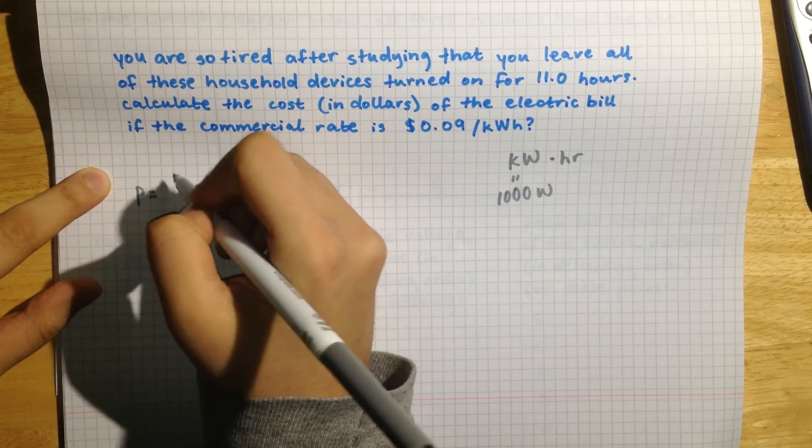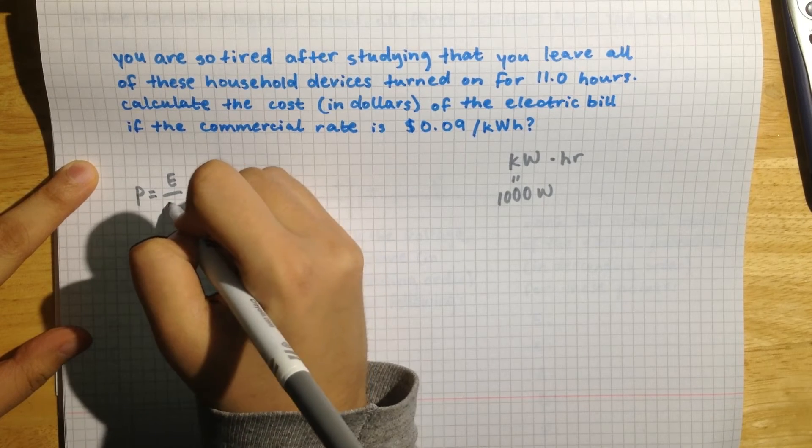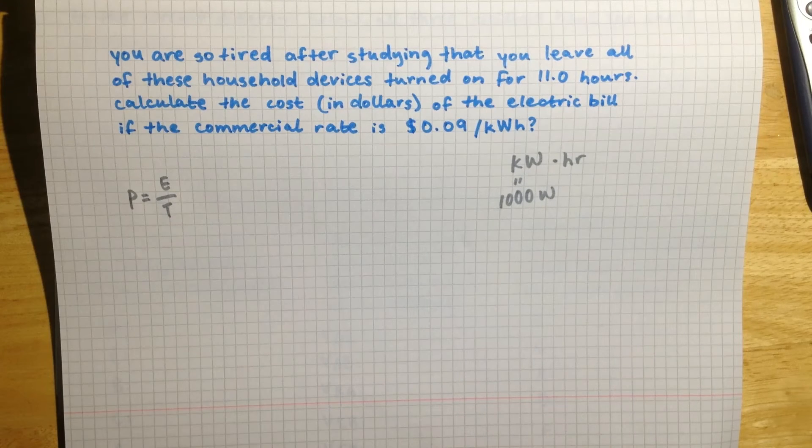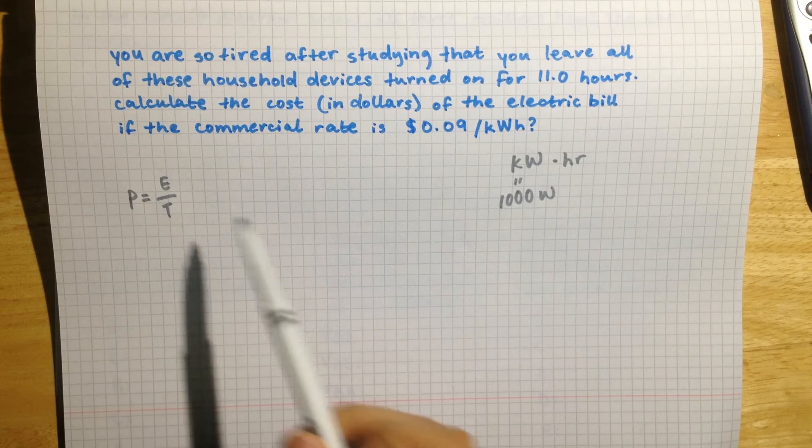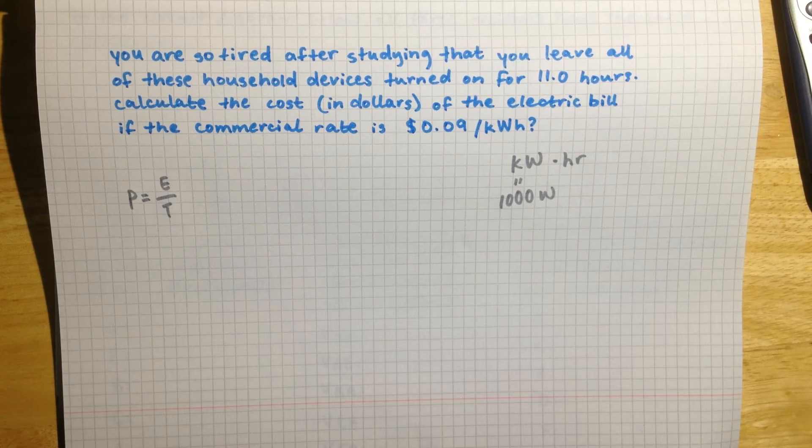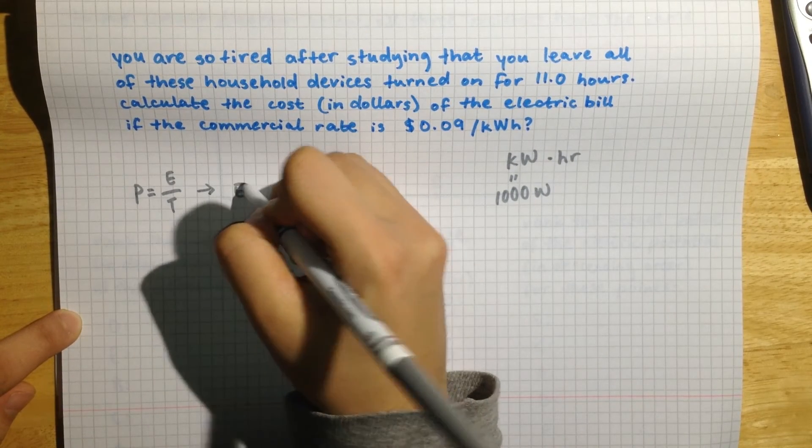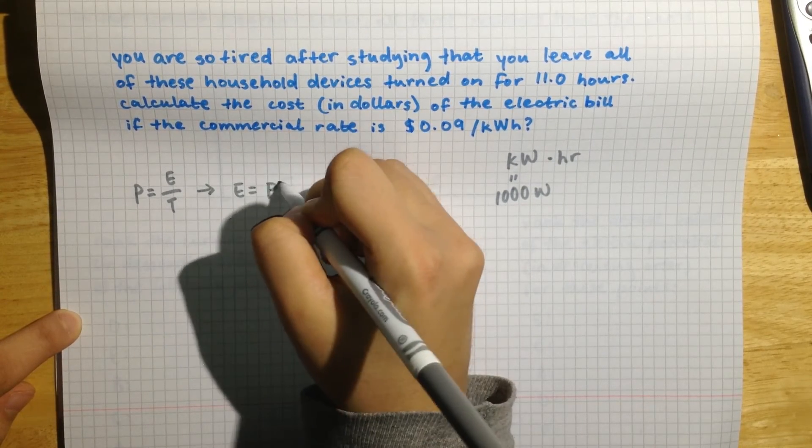Power is equal to energy divided by time, and we are going to be solving for E, energy, because a kilowatt hour is a unit for energy. So rearranging this equation we get E is equal to P times T.